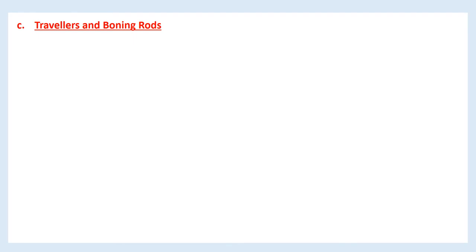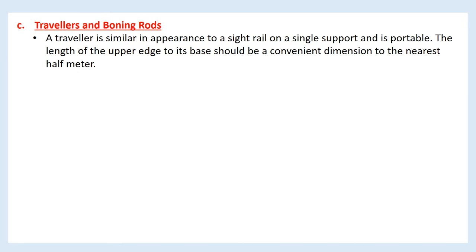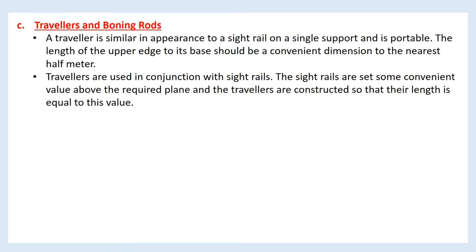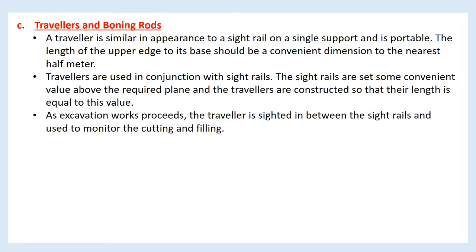Travelers and boning rods: a traveler is similar in appearance to a sight rail on a single support and is portable. The length from the upper edge to its base should be a convenient dimension to the nearest half meter. Travelers are used in conjunction with sight rails. The sight rails are set some convenient value above the required plane, and the travelers are constructed so that their length equals this value. As excavation proceeds, the traveler is sited between the sight rails and used to monitor the cutting and filling.